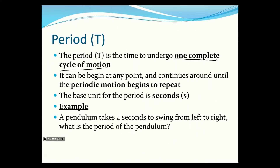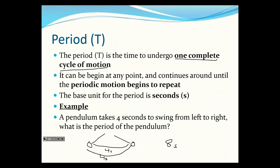A pendulum takes four seconds to swing from left to right. What's the period of this pendulum? That motion isn't repeating itself yet — it needs to swing back and repeat the exact same thing, which will take another four seconds. So the period is eight seconds.